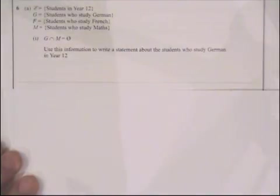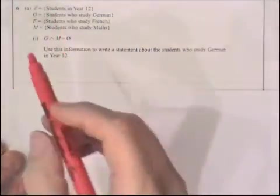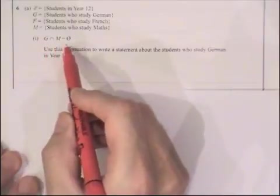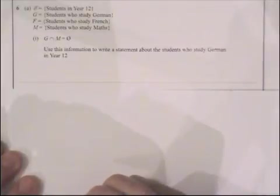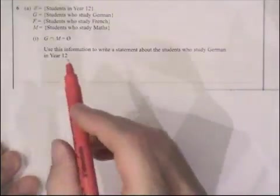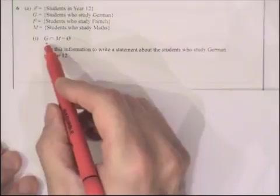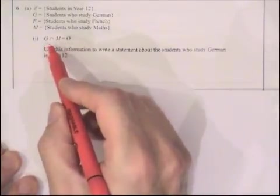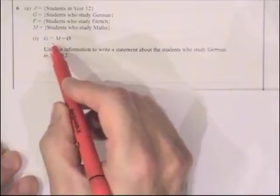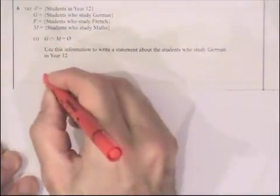Question 6 is about sets. It gives us some details of some sets. Then it tells us that g intersection m is the empty set. It wants us to use that information to write a statement about students who studied German in year 12. So students who studied German in year 12 intersection with maths is the empty set. In English, students who study German in year 12 do not study maths.